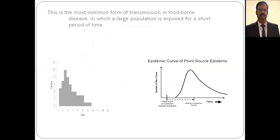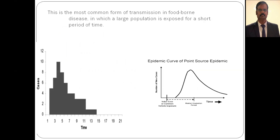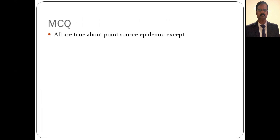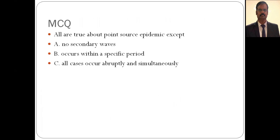The characteristic curve of a point source epidemic shows a sudden rise and sudden fall, with the most common form of transmission being food-borne, where a large population is exposed for a short period. An MCQ example: 'All are true about point source epidemic except?' — no secondary waves, occurs within a specific period, all cases occur abruptly and simultaneously, and always due to infectious agent. The answer is D — it is not always due to an infectious agent.